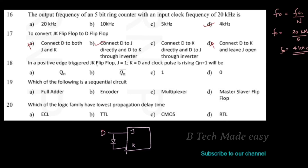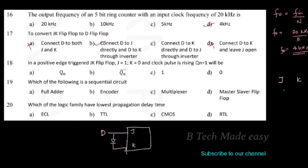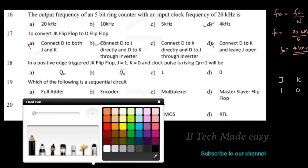Next question: in a positive edge-triggered JK flip-flop, if J = 1 and K = 0 and the clock pulse is rising, Q(n+1) will be 1. The correct answer is option C.